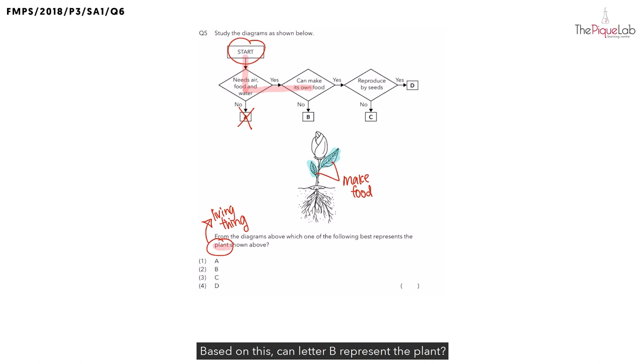Based on this, can letter B represent the plant? Letter B cannot represent the plant because the plant makes food. Let's now continue to trace the flowchart. Since letter B cannot represent the plant, we should not highlight downwards. Instead, we should highlight towards the right side to now reach the third question. The third question in this flowchart is whether the plant reproduced by seeds.